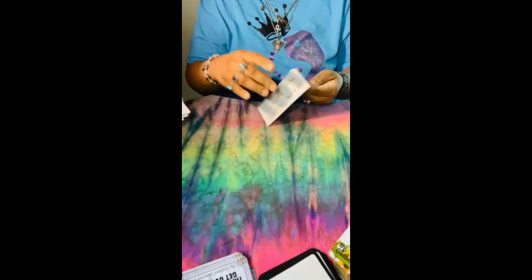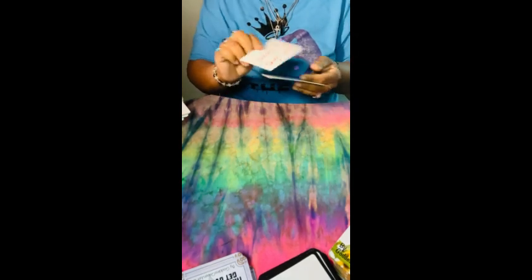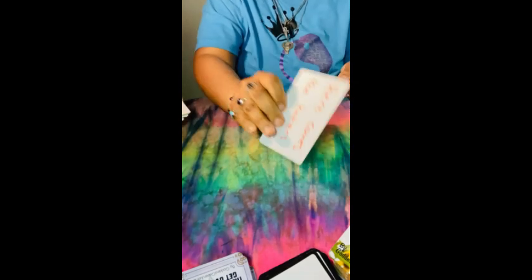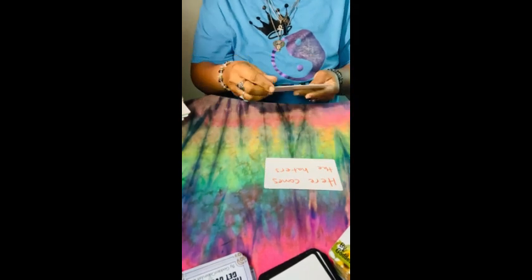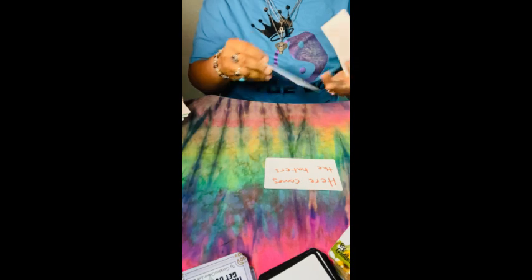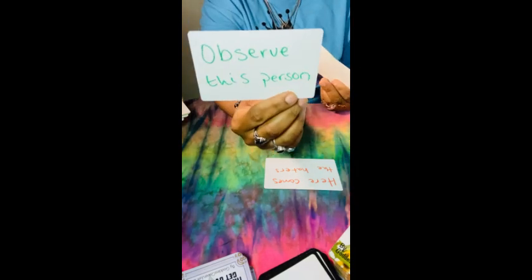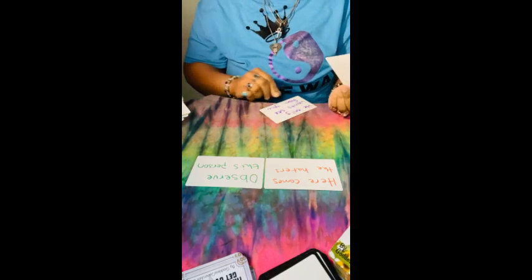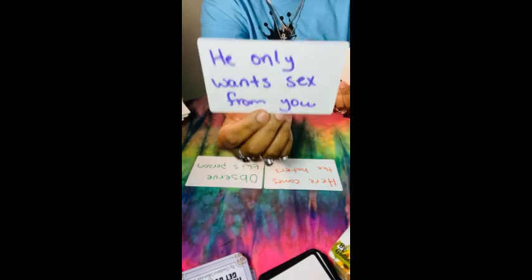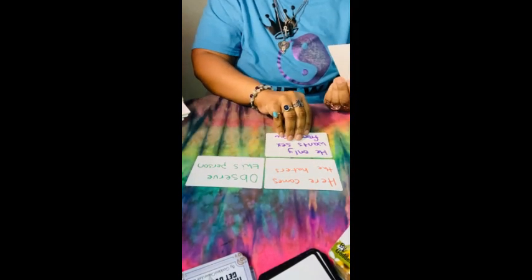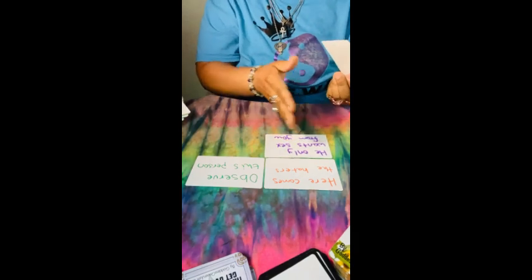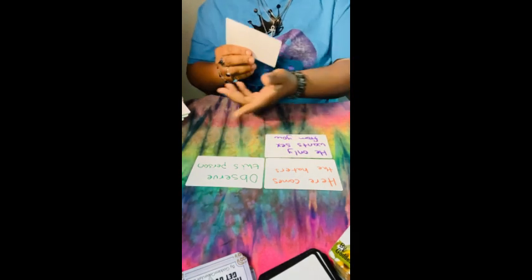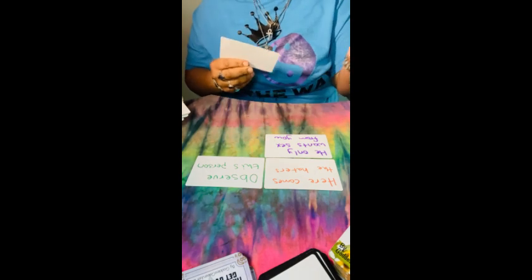So let's see, we have, here comes the haters. So your third eye could be opening up because you got haters coming your way. It says, observe this person. So whoever these haters is, you gonna be observing them, or you been observing them. It says, he only wants you for sex. So one of these haters could be somebody that is secretly just wanting you for sex. Your ancestor said your third eye is opening up so you can see the hidden agendas that these people are bringing your way.